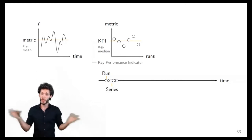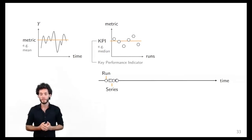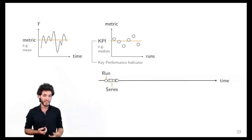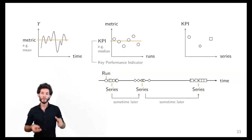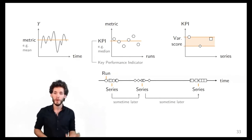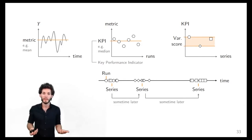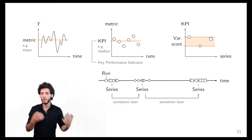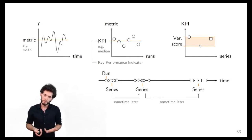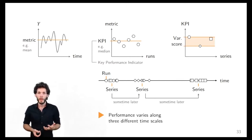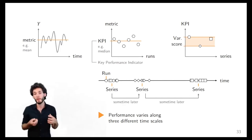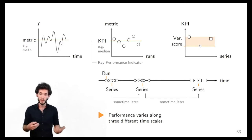Now let's think about replicability: say somebody else, or even yourself a month or year from now, repeats the same process and computes the KPI again. It's reasonable to bet you won't get the exact same value — there will be some variability between those KPIs. How do we quantify whether that variability is too big or small enough? The key point is that on three different timescales we observe different sorts of variability, and if we want to make a statement about replicability in the long term, we need to account for these different types of variability each in their own way.